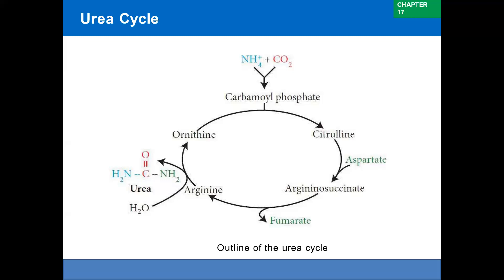Step three: synthesis of argininosuccinate. The reaction catalyzed by argininosuccinate synthetase links citrulline's ureido group to the amino group of aspartate, which is produced in mitochondria by transamination and transported to the cytosolic compartment to produce argininosuccinate. The formation of argininosuccinate brings the second nitrogen atom from aspartate.